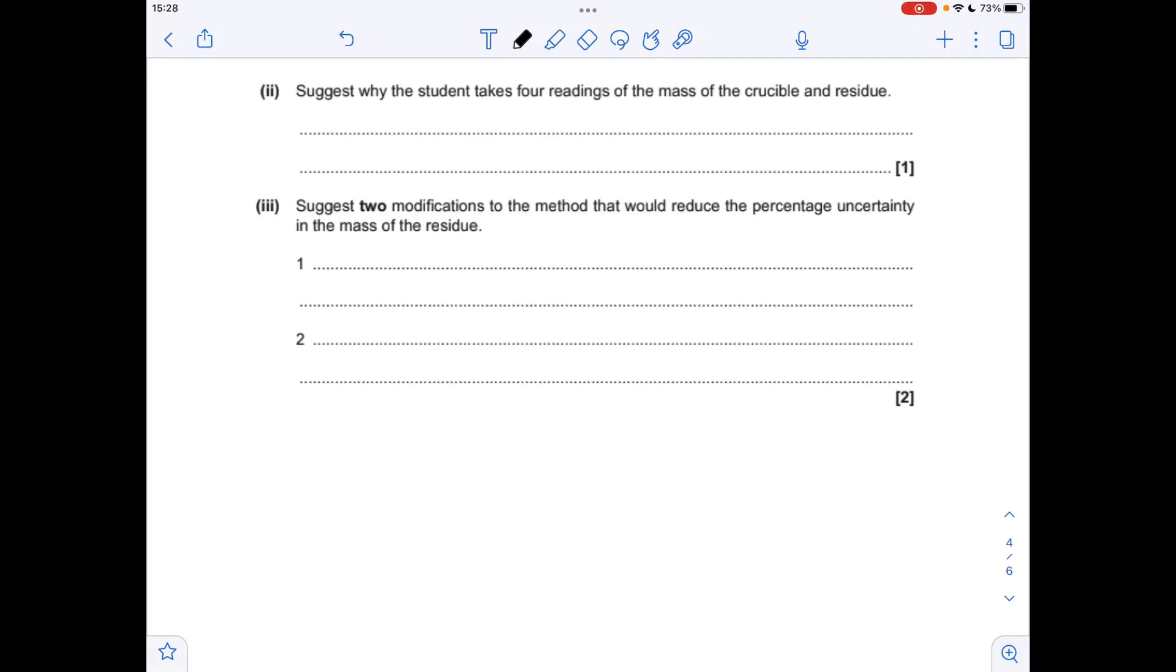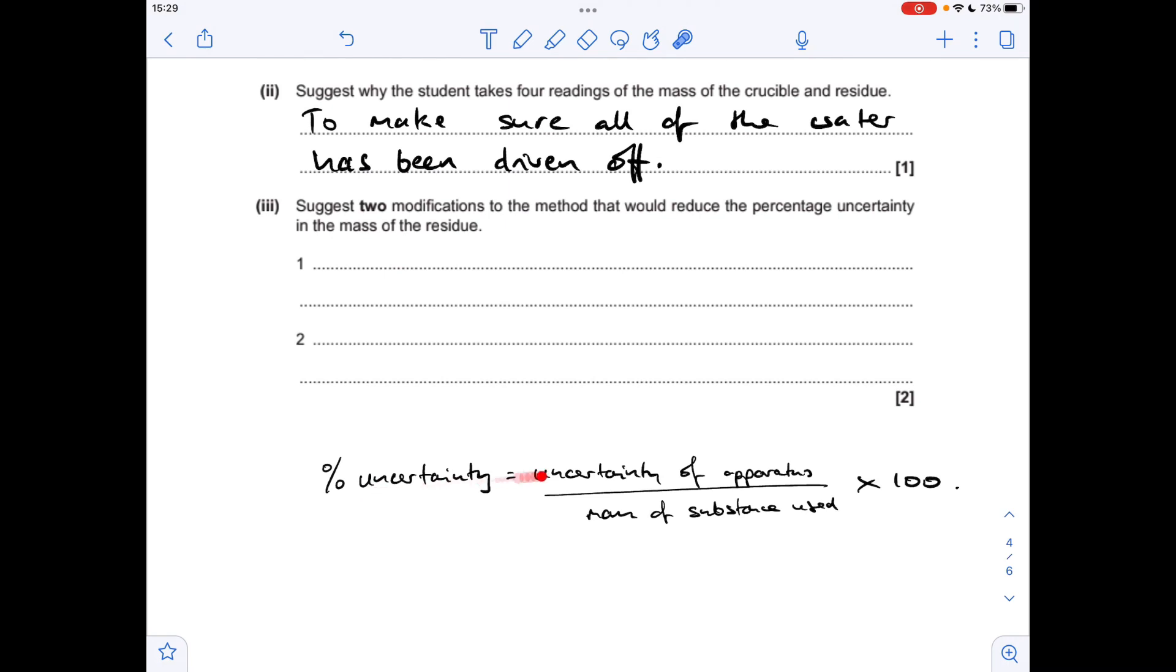The question finishes with a couple of practical skills type questions. Why is the student taking four readings of the mass of the crucible and residue? Well that's obviously to make sure that all the water has been driven off and they've gone to constant mass.